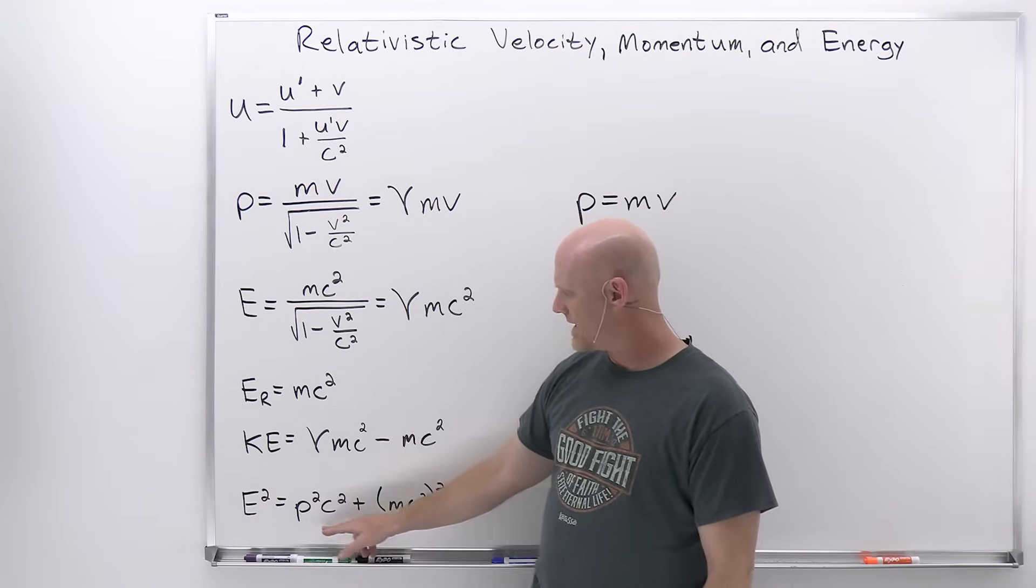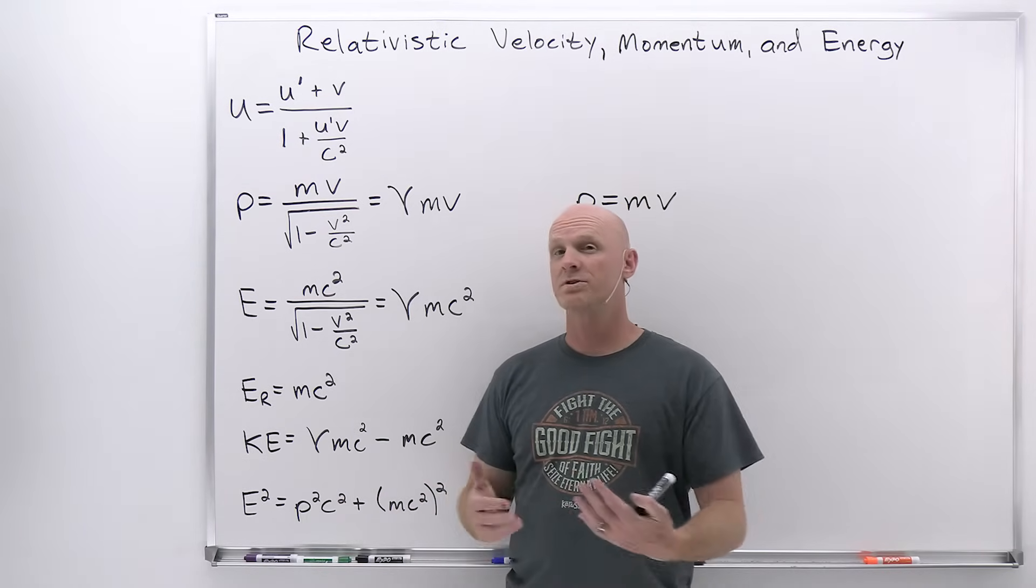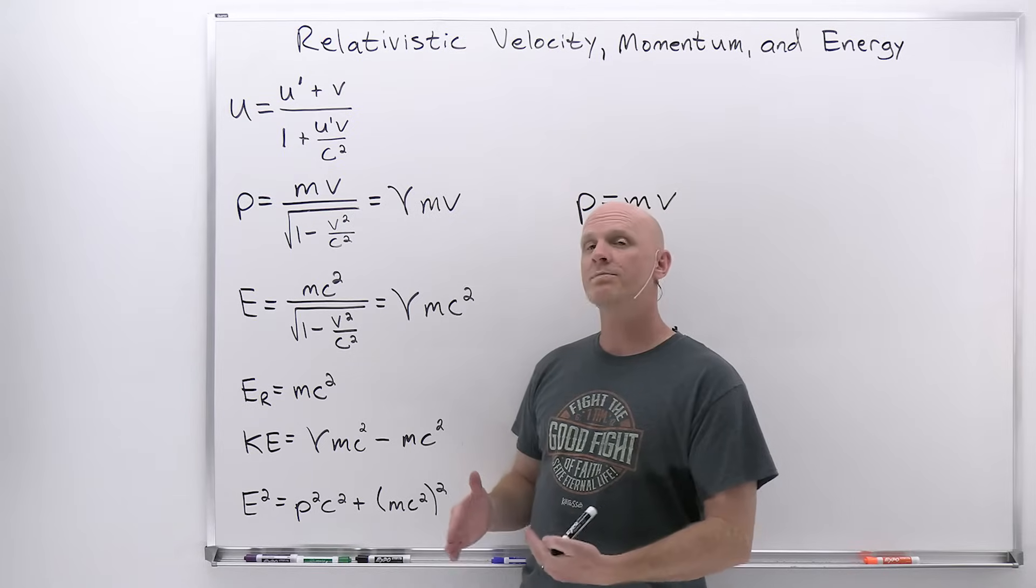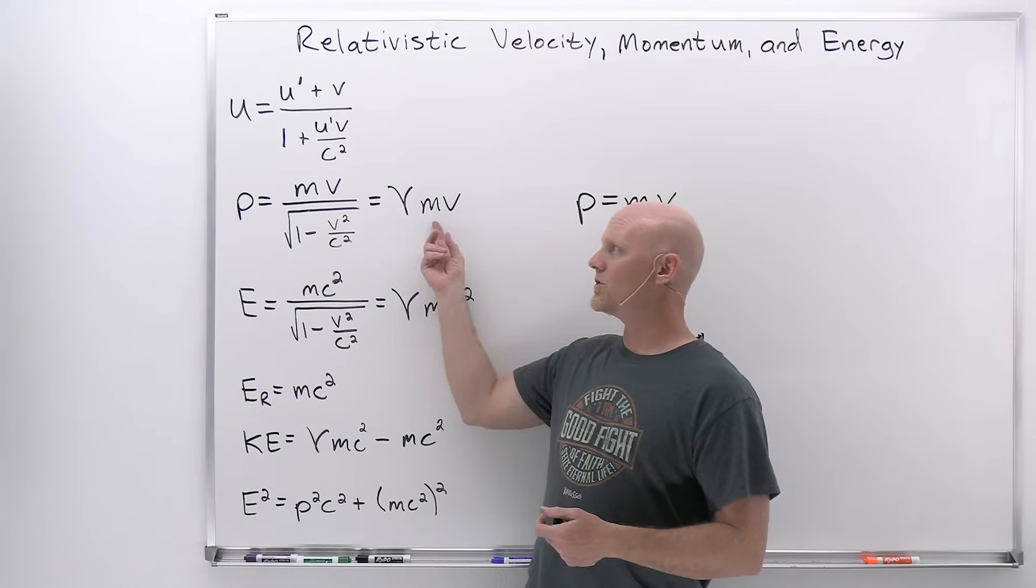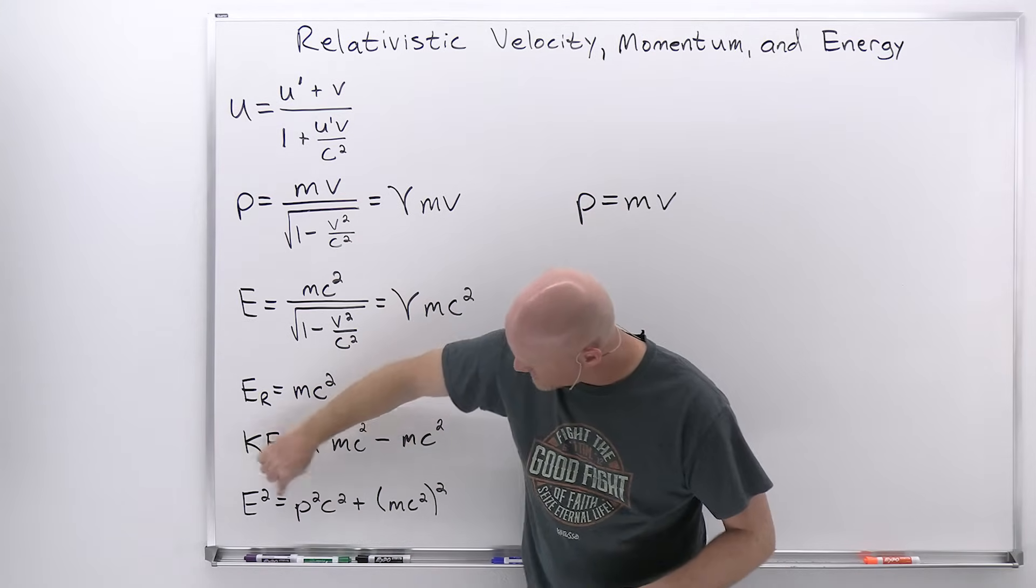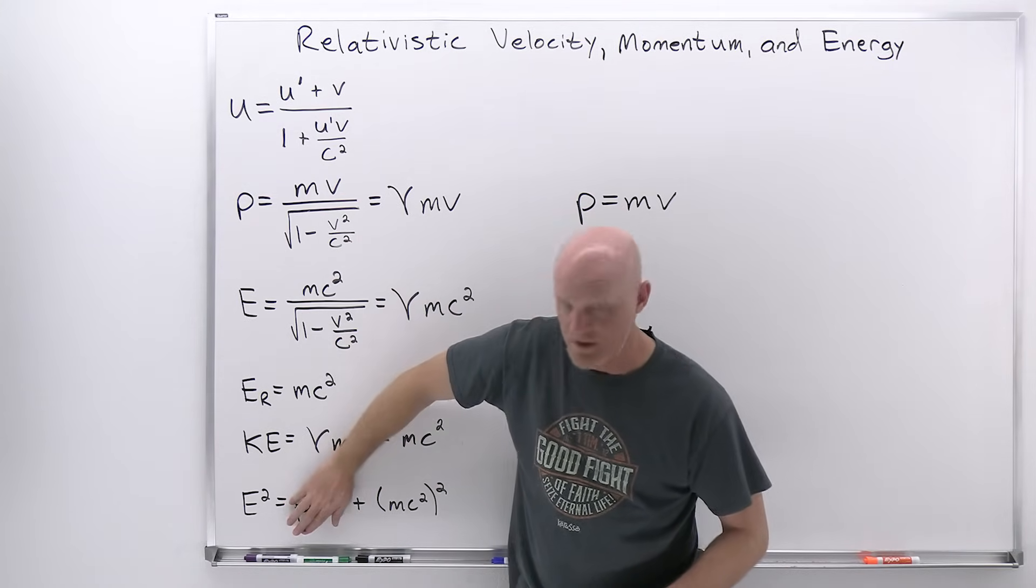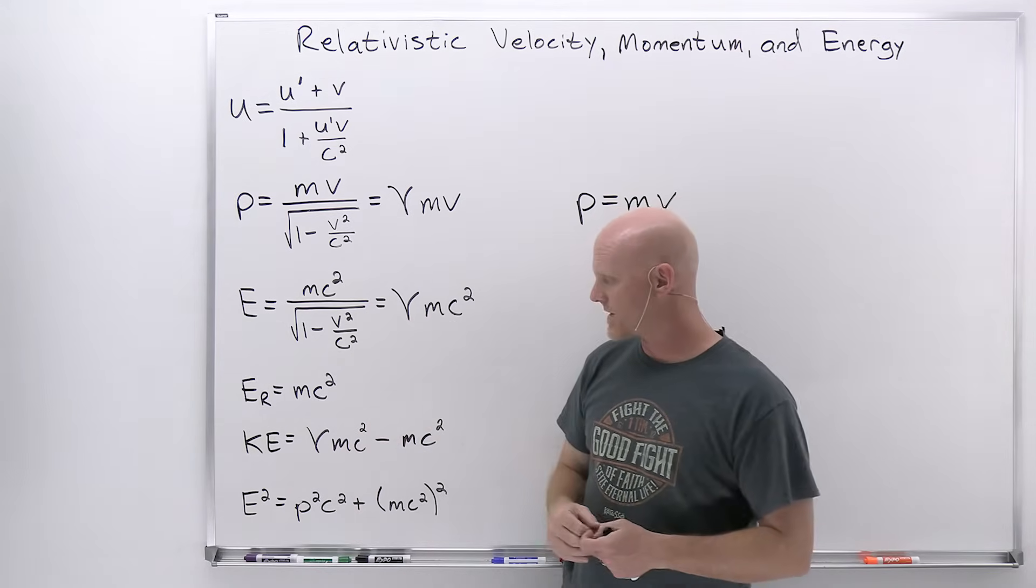Now it turns out this rest energy falls out of this last equation right here, where you take the total energy squared, and there's really two parts. What if a particle's not moving? Well, if it's not moving, then it has no momentum, and this term goes away. And if you take the square root of both sides, you'd end up with e equals mc squared, which is the rest energy. That makes sense. That's where that comes from.